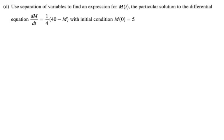And, you know, you had to expect this was coming. Use separation of variables. It's nice that they're telling you explicitly how to do it. To find an expression for m of t, the particular solution to the differential equation with the initial condition. All right. Step 1 is the key, I think, to solving this. dm/dt is equal to...